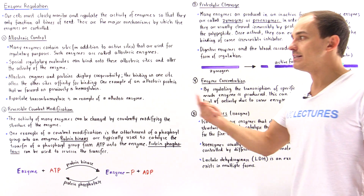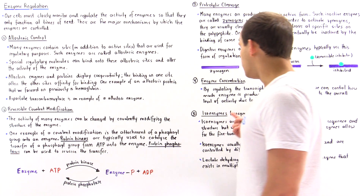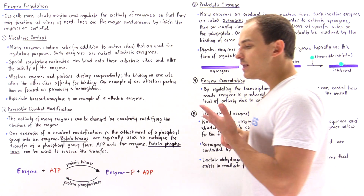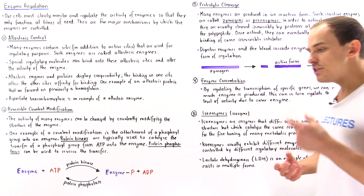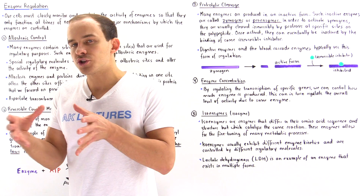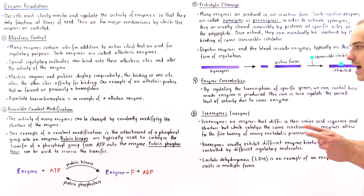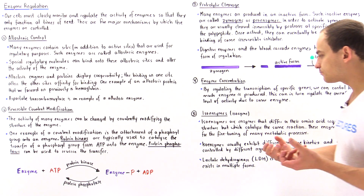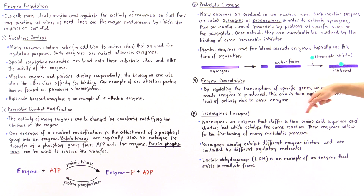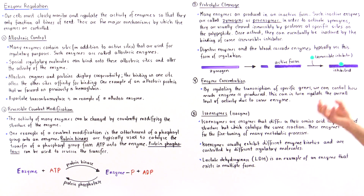The final regulation method is isoenzymes, or isozymes. Isoenzymes are enzymes that differ in their amino acid sequence and therefore differ in their three-dimensional structure, but are used to carry out the same type of reaction. They are essentially multiple forms of the same enzyme that catalyze the same type of function, allowing for the fine tuning of many metabolic processes.